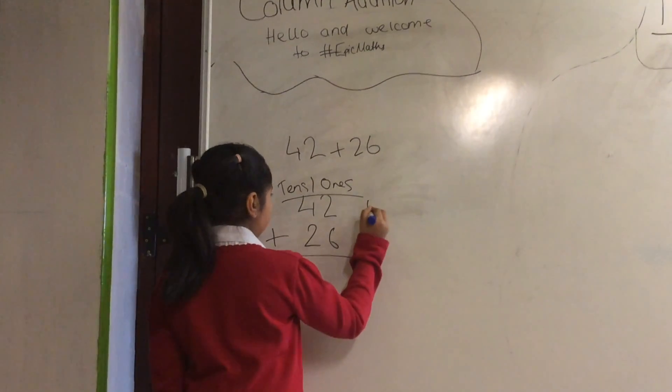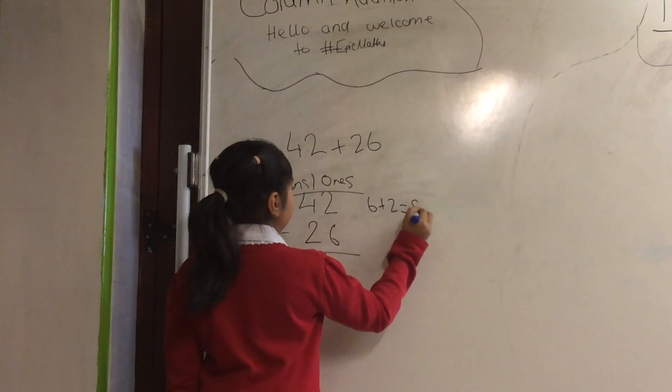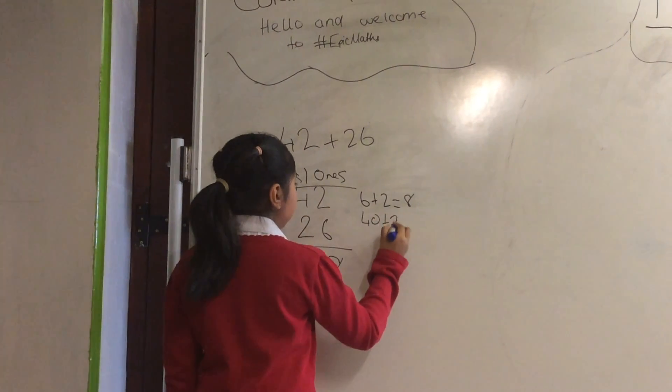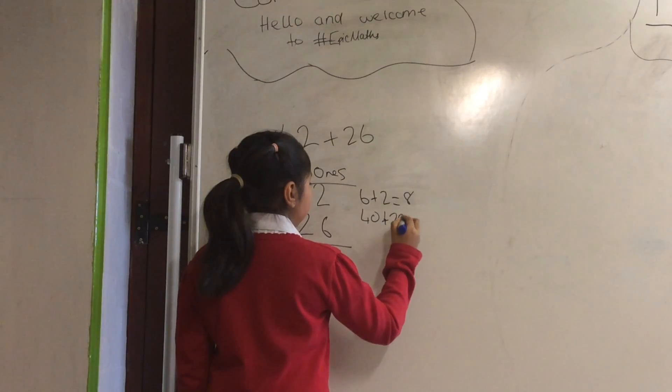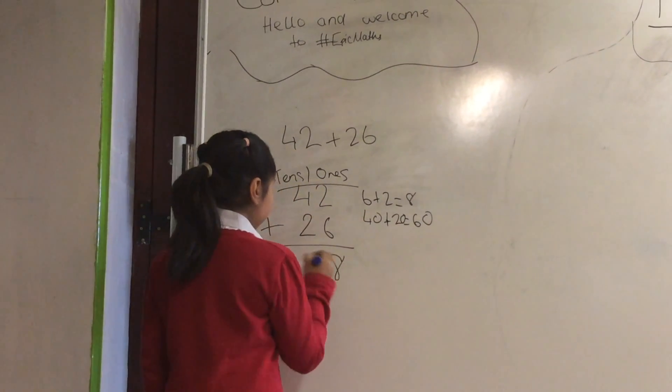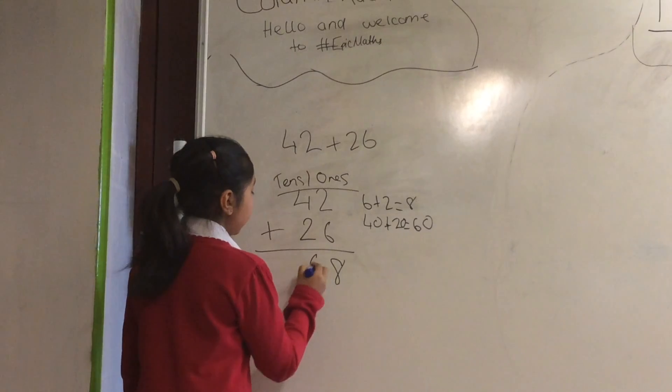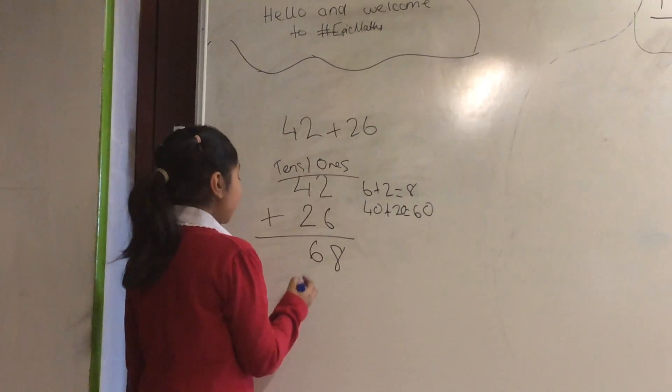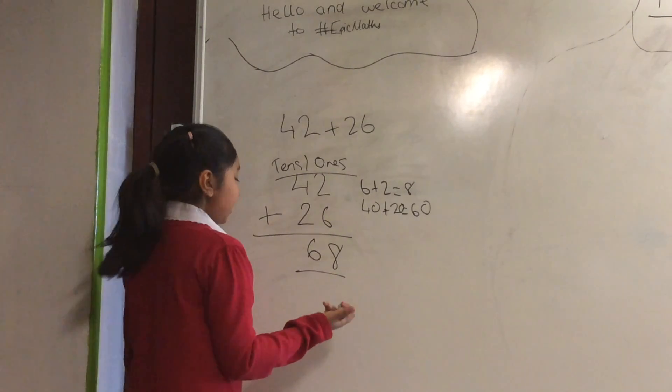Now you do the ones first, so you do 6 plus 2 which is 8, and you do 40 plus 20 which is 60. Now you don't put 60, you put only 6 because when you pronounce 68, you say it is 60. So the answer is 68. Simple, right?